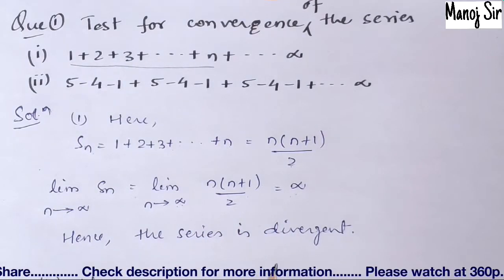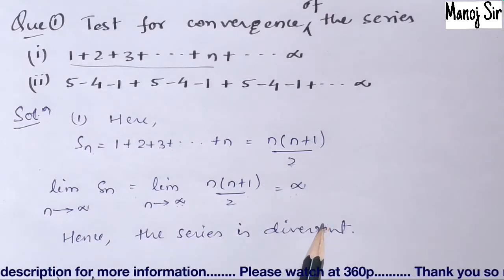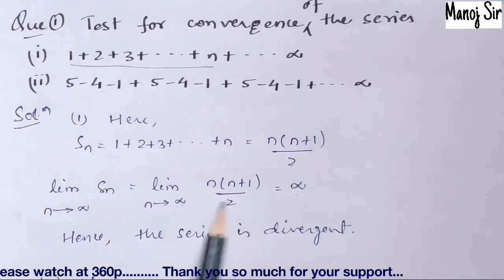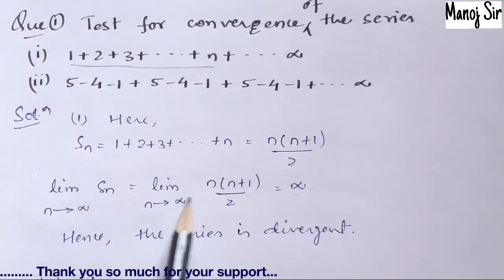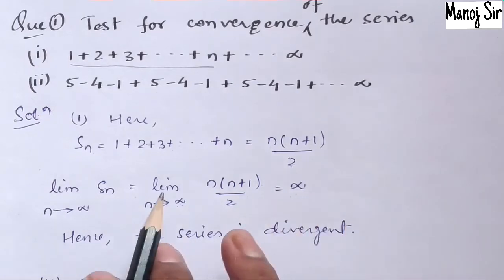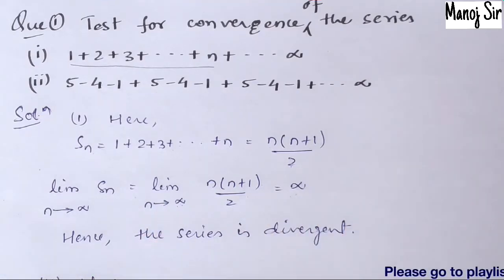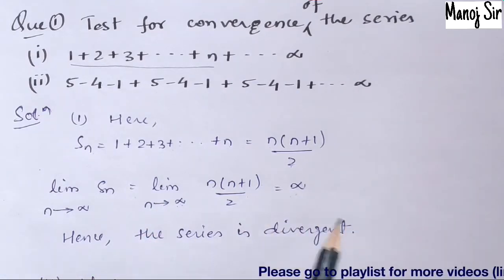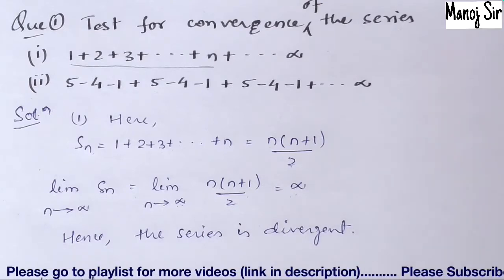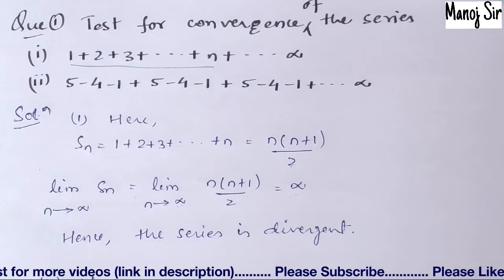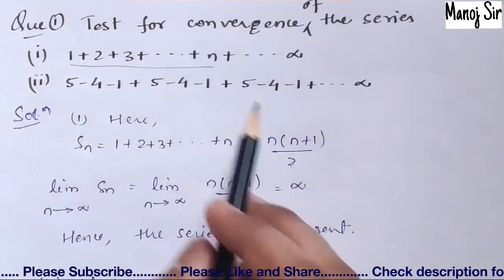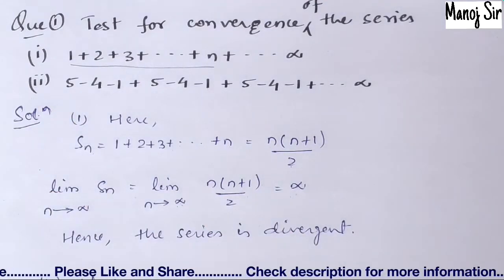Since the value of the limit is infinity, we can say that the first series is divergent. Whether you get +∞ or −∞, in both cases the series is divergent. Now we are going to solve the second series.